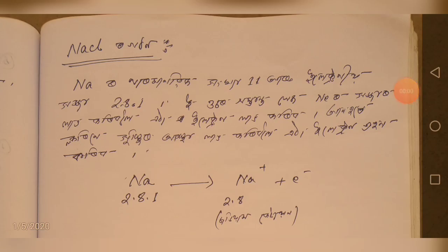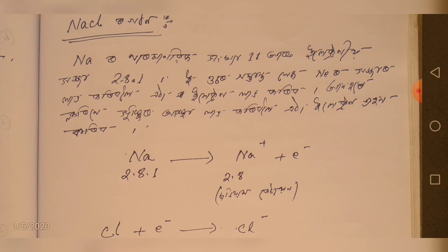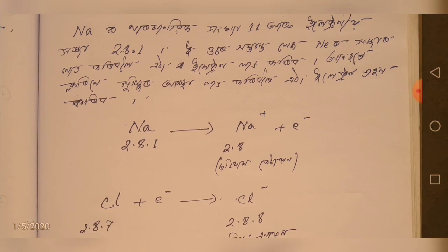I am going to use sodium chloride. We are going to have 2,8,7 meaning here — we have 7 electrons, so this is what we need to have more electrons.